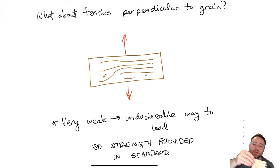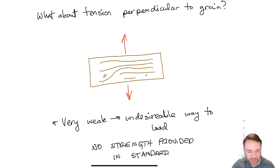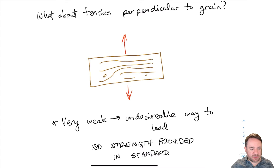This is actually the worst possible way to load a piece of wood. You can easily pull off a piece just with your fingers. It's so weak in fact that we don't have any design conditions where we would want to do this, and the standard doesn't give us a strength for it. The only exception is that some types of connections may load in that direction, and we have a splitting resistance for that, which we'll discuss when we talk about connections.